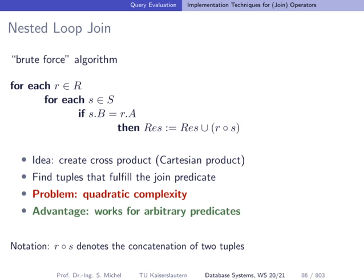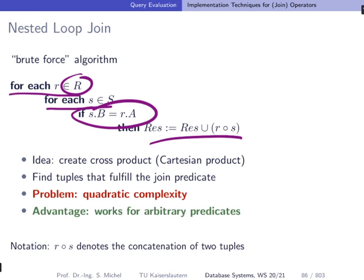Here's the first algorithm, nested loop join. This is really a brute force algorithm, and if you look at the name, nested loop, it gives it away. What you're doing here is you're looping over both relations, and you're looking at all possible combinations of R and S tuples, and you're evaluating if the join predicate evaluates to true, and if it's true, then you're appending the concatenation of the two tuples in your result. We have a for each loop for each R in R, you're going over S, that means as many times or as many tuples you have in R, you're scanning relation S. And here you're checking the join predicate. If it's true, you're producing an output tuple.